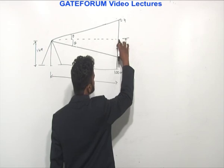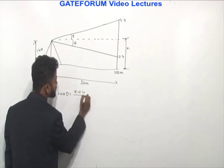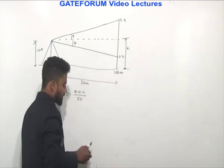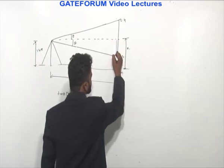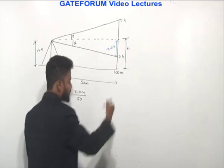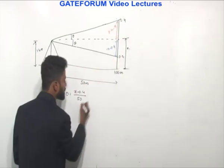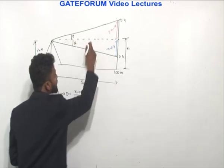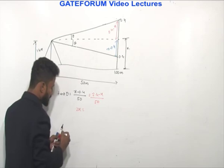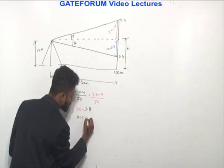With x as the instrument axis height above the benchmark, x minus 0.4 is the vertical distance to the lower staff reading. So tan θ = (x − 0.4) / 50. Since both angles are equal, tan θ also equals (2.4 − x) / 50. Setting these equal: x − 0.4 = 2.4 − x, giving 2x = 2.8, so x = 1.4 meters.